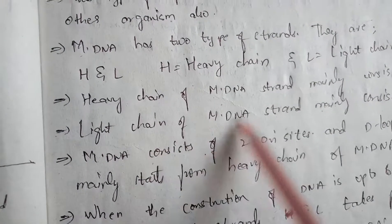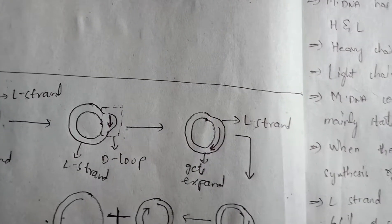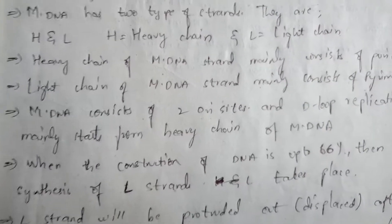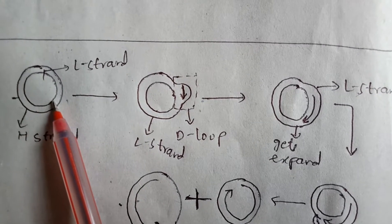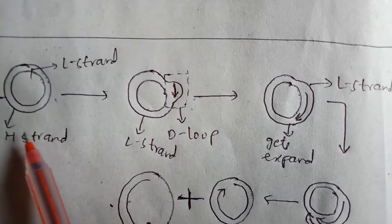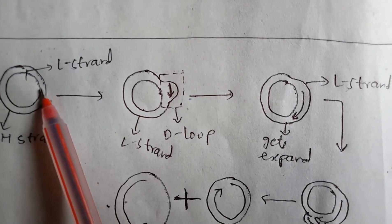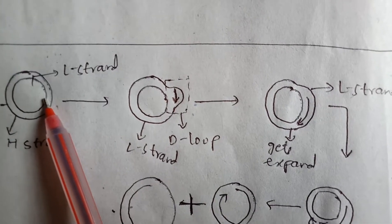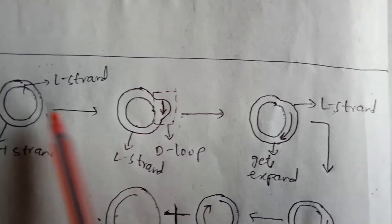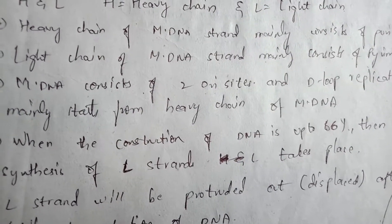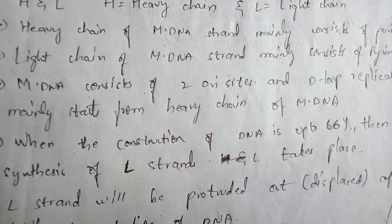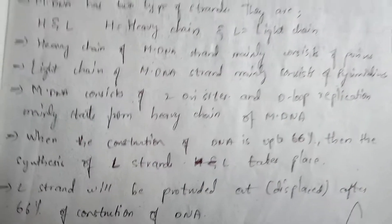The heavy chain of mitochondrial DNA mainly consists of purines — adenine and guanine. The light chain mainly consists of pyrimidines — cytosine, thymine, and uracil. Mitochondrial DNA consists of two ori sites — origin sites of replication — where initiation of replication takes place. The replication mainly starts from the heavy chain of mitochondrial DNA.